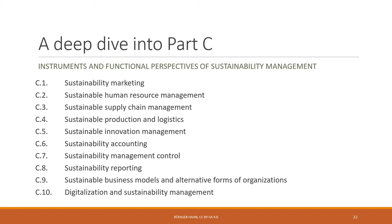Part C covers the internal instruments and functional perspectives of sustainability management — really your how-to guide for how companies can become more sustainable. It includes chapters on sustainability marketing, sustainable human resource management, sustainable supply chain management, sustainable production and logistics including waste management, sustainable innovation management covering technological and organizational innovations, sustainability accounting, sustainability management control, sustainability reporting, sustainable business models and alternative forms of organizations, and digitalization and sustainability management.